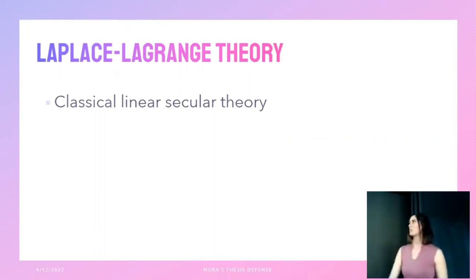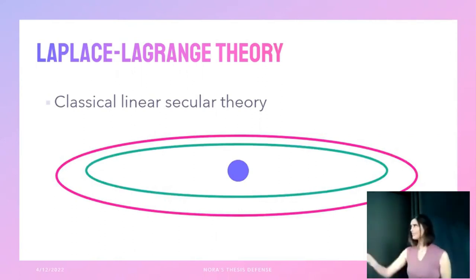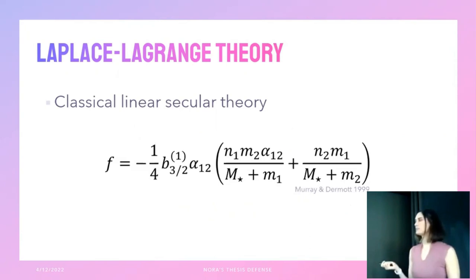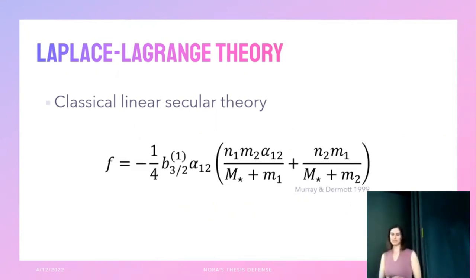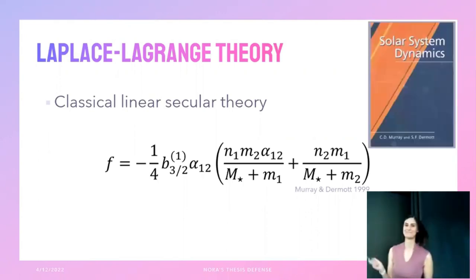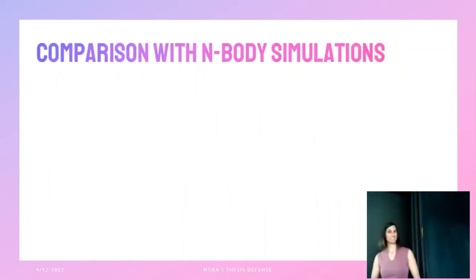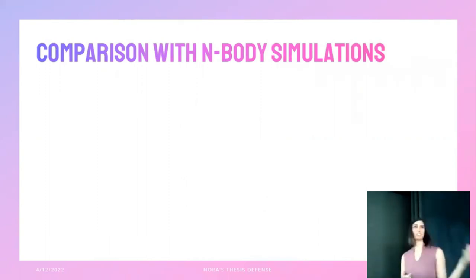I'm far from the first person to study nodal precession rates. Two 18th-century mathematicians developed the analytical framework still heavily used today: classical linear secular theory. 'Secular' here means things happening on long timescales — we ignore where exactly the planets are in their orbits and look at how the orbits as a whole interact. The 'linear' part means linear algebra: matrices and eigenfrequencies. From this theory, the nodal precession rate formula shows no dependence on eccentricity e, no dependence on inclination i, and very little dependence on alpha — because it was designed for the solar system, which has low eccentricity and inclination.